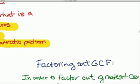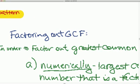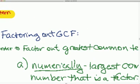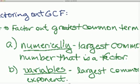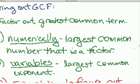So let's look at factoring out the greatest common factor. In order to factor out the greatest common term, you look at the numbers first, numerically. What is the largest common number that is a factor? And it has to show up in each term. Every one of those terms is added and subtracted. That's what common means.